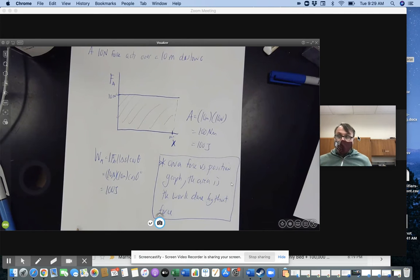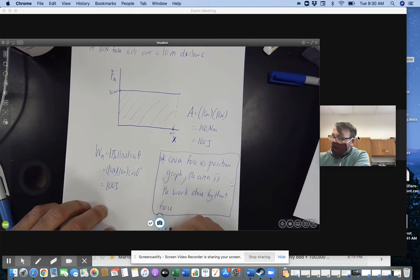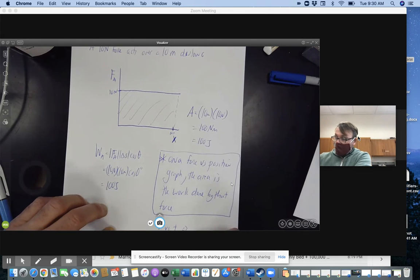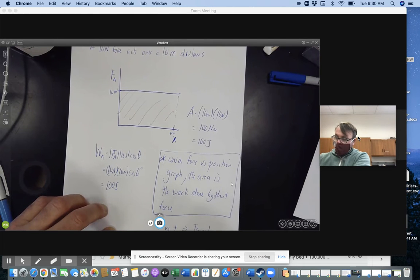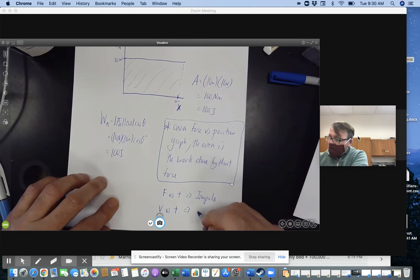Now, we've done area a couple of times. Let's just recall the other two times we looked at the area under a curve. So stop the video and list for me the other two times. Alright, hopefully you're back and realize the other two times that we've done area under a curve were for a force versus time graph, in which case the area was impulse. And then the other one we did was a velocity versus time graph, and the area was displacement.